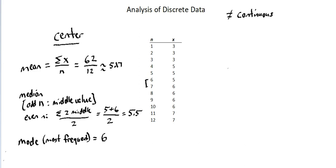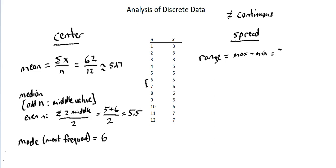Now let's look at measurements relating to the concept of the spread of the data, starting with range. The range is the maximum data value minus the minimum data value. In our case, since the data is ordered, the maximum value is seven and the minimum value is three. So the range is seven minus three, which is four.